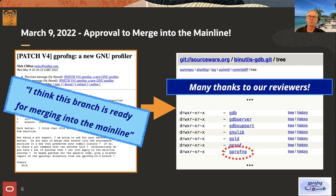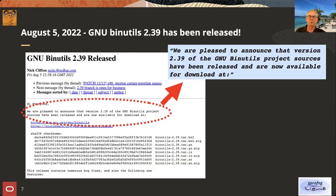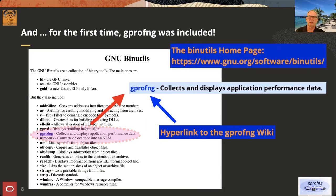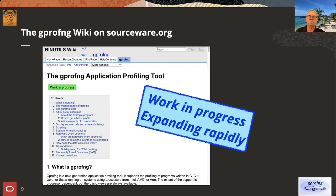As of binutils 2.39, we are included. If you'd like to have GPROFNG, make sure you have 2.39 — meanwhile 2.40 has been released. When you go to the binutils website and download, you'll automatically get GPROFNG. On the sourceware.org binutils page, you'll see GPROFNG listed, and clicking it takes you to documentation. We're also working on a wiki, trying to get it as complete as possible — it's growing steadily.